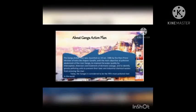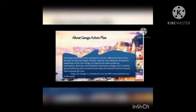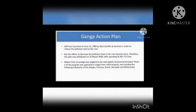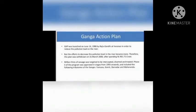The Ganga Action Plan was launched on 14th January 1986 by the Prime Minister Shri Rajiv Gandhi, with the main objective of reducing pollution of the river Ganga to improve water quality by diversion and treatment of domestic sewage. Today, Ganga is considered the fifth most polluted river in the world. Millions of liters of sewage were targeted to be intercepted, diverted and treated.